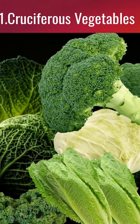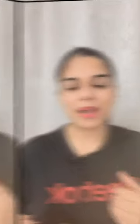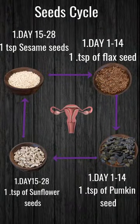So how do you work on this? Number one: try to include more cruciferous vegetables like cauliflower, cabbage, and lettuce — these vegetables are really going to help balance your hormones. Number two: get into seed cycling. If you want to know more about seed cycling, visit the description.